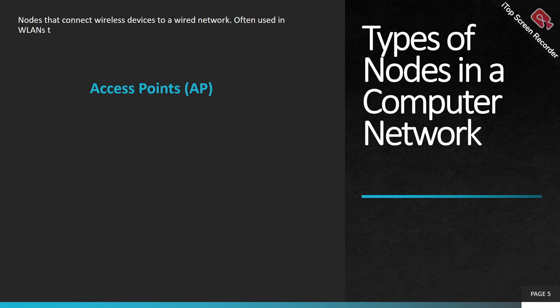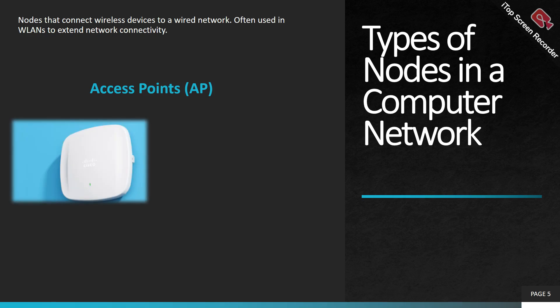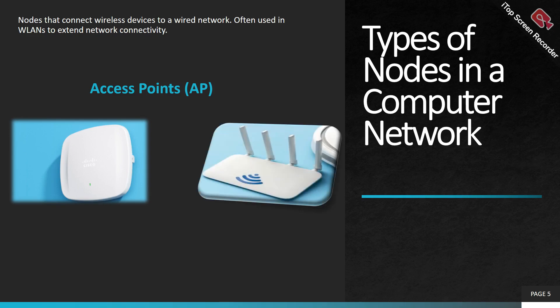Mail servers include Microsoft Exchange, Google, and Yahoo — these are all mail servers, and they also become nodes in the network but are called servers based on their capacity. The next category is access points. Access points come into picture when we talk about wireless networks. A node that can connect wireless devices to a wired network — that is the access point, which gives you Wi-Fi connectivity.